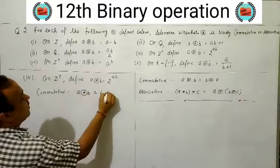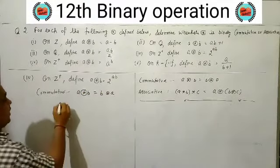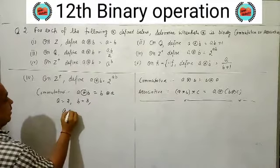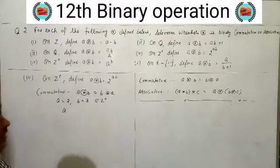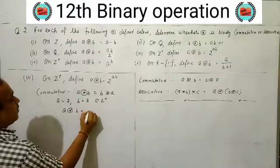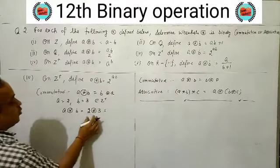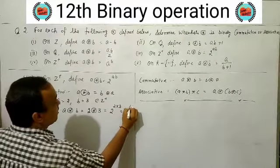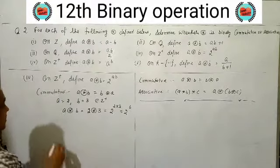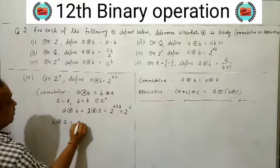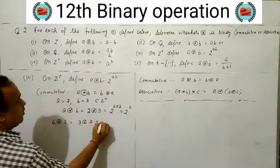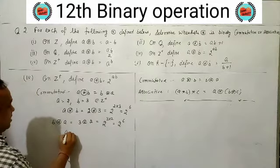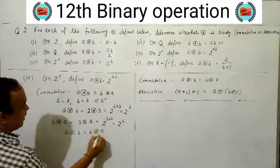Commutative check: a★b vs b★a. Taking example a=2, b=3 from Z+. A★B = 2★3 = 2^(2×3) = 2^6. B★A = 3★2 = 2^(3×2) = 2^6. So A★B = B★A, which means the given operation is commutative.